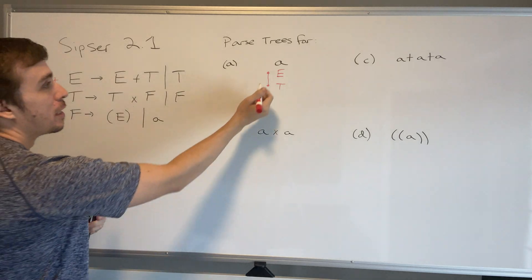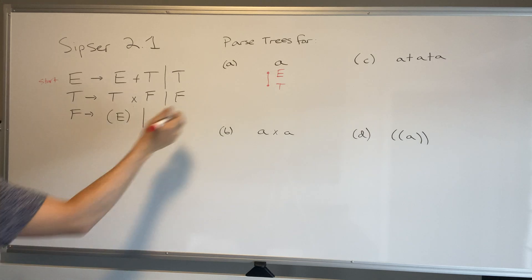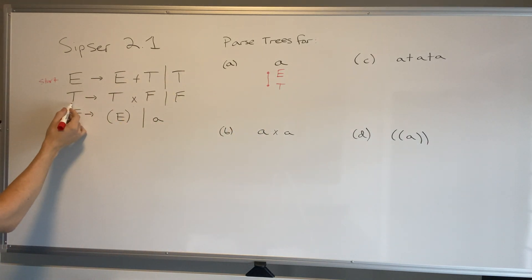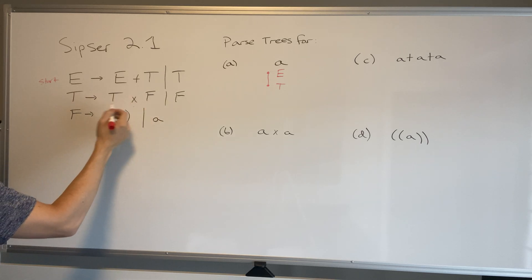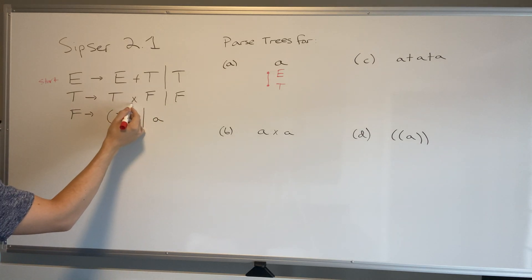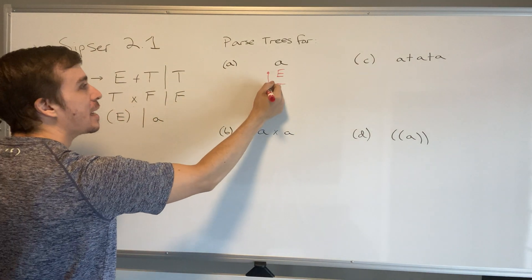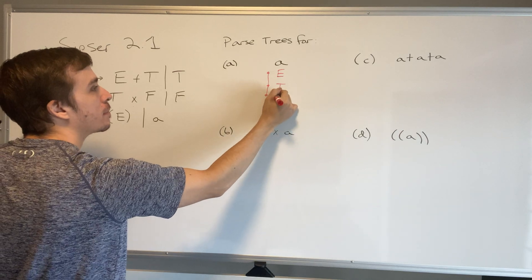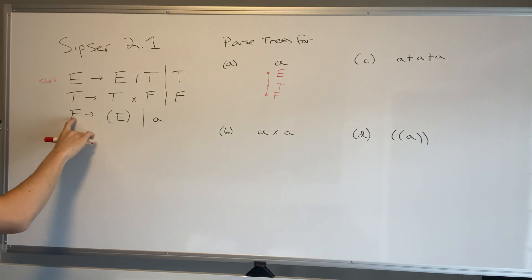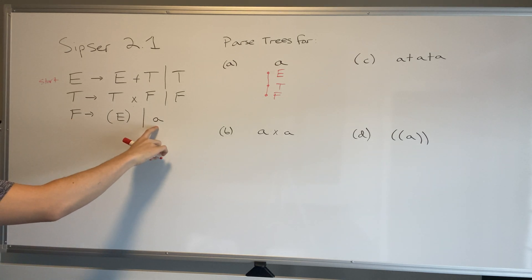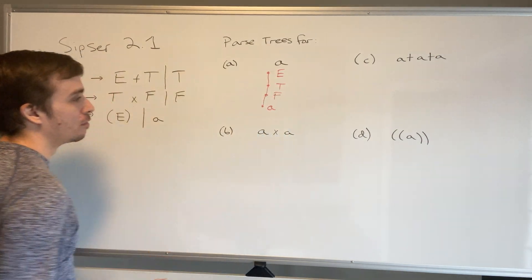Now we're at T, and the only node under E is T. For T, we could apply T→T×F or T→F. We can't apply T→T×F for the same reason — the terminal × would be generated and it's not present. So we apply T→F, giving one node F underneath T. Now F must generate just the letter 'a', so F→a. That completes the parse tree for the single letter 'a'.